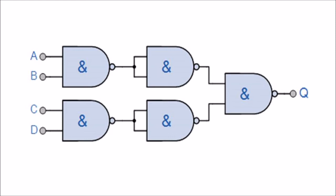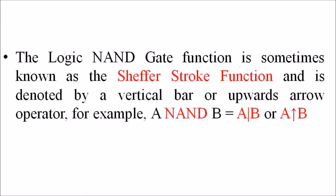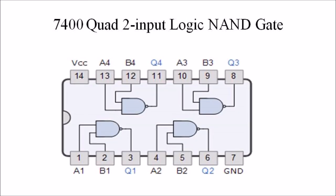The logical NAND gate function is sometimes known as the Sheffer stroke function and is denoted by a vertical bar or upwards arrow operator. For example, A NAND B is equal to A vertical bar B, or A up-arrow B. The most commonly available logic NAND gates and inverter ICs are the 7400 quad two-input logic NAND gate ICs.